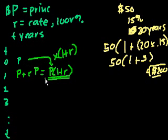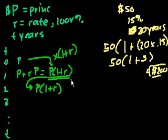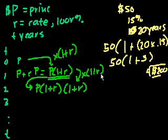So to go into year two, we're going to pay what we owed at the end of year one, which is P times 1 plus r. And then we're going to grow that by r percent. So we're going to multiply that again times 1 plus r. And so that equals P times 1 plus r squared.